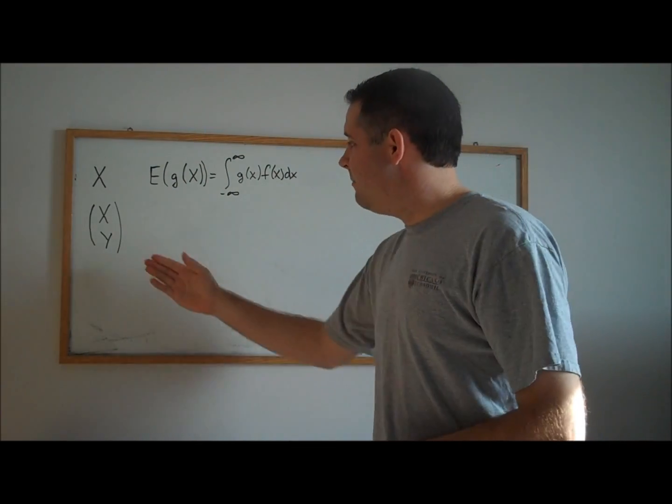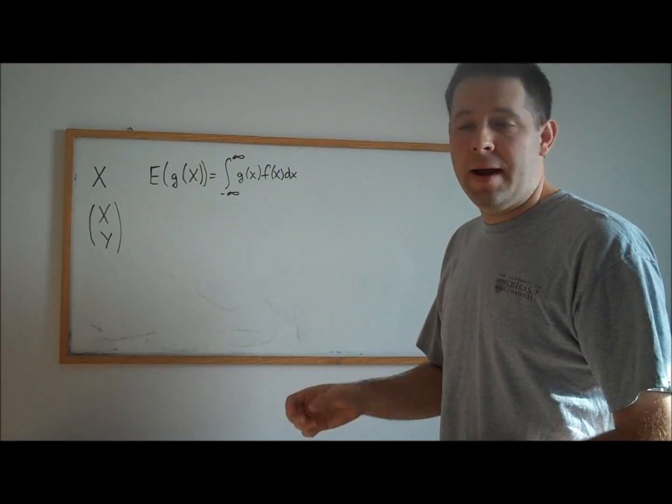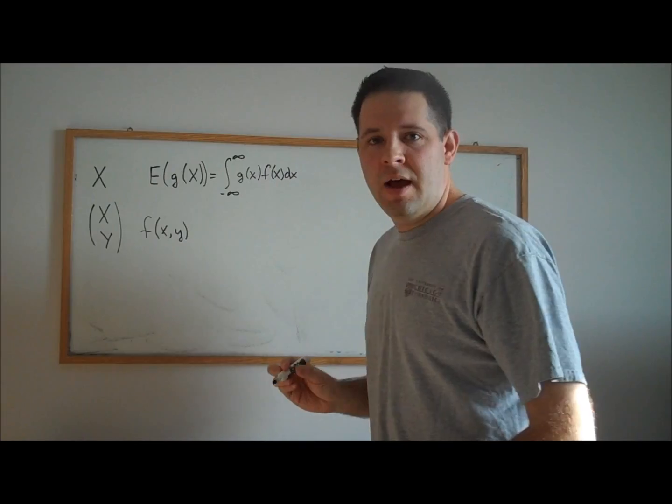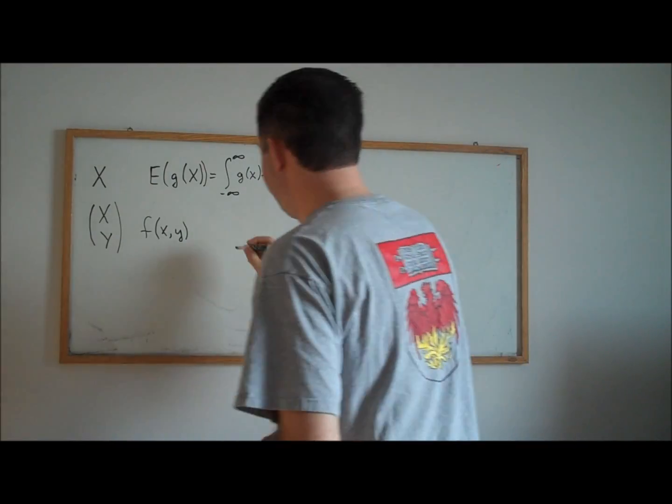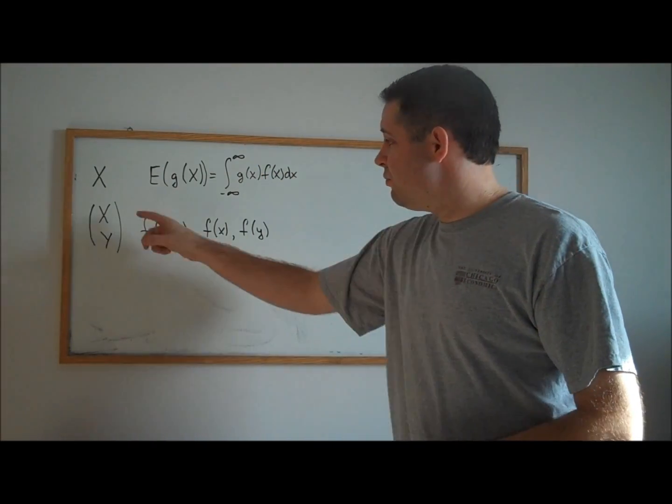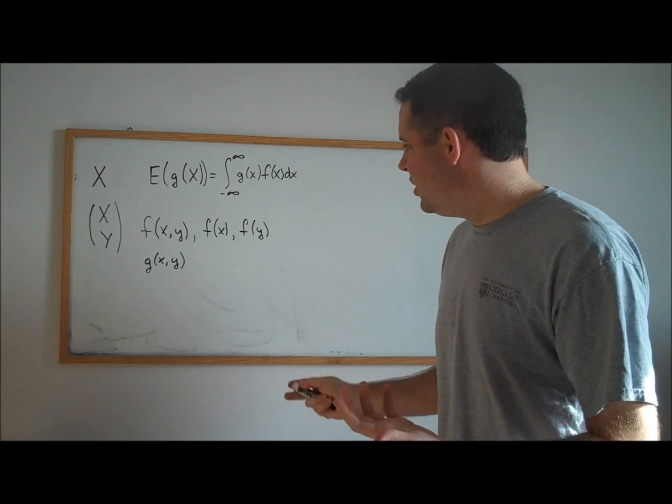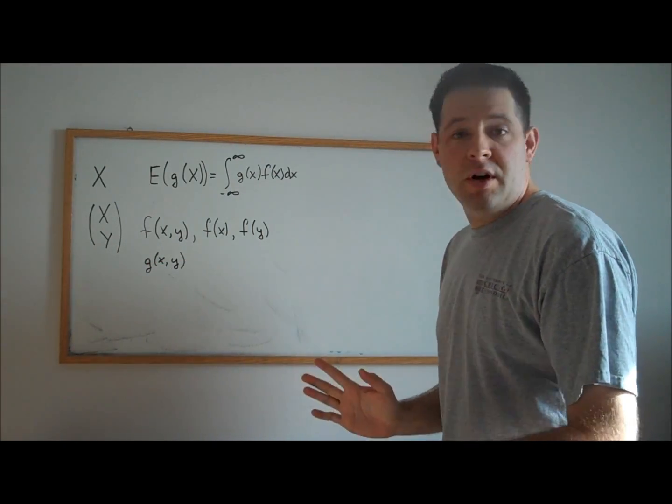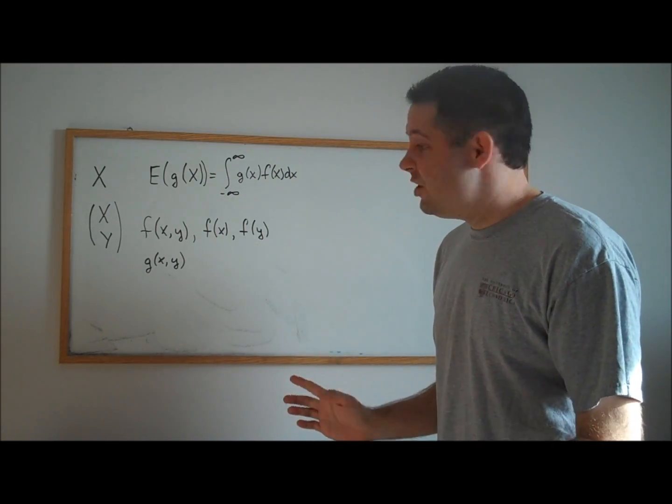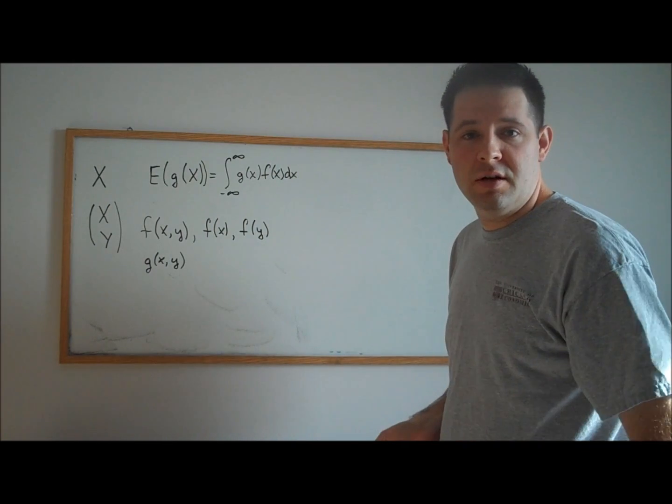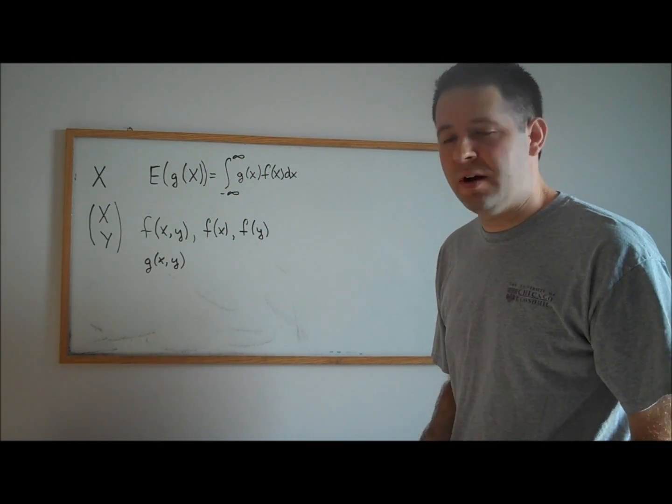Let's consider the random vector X and Y. This is going to have a joint distribution and some marginals. Now, suppose that we had a function of this random vector, g(X,Y). It takes two inputs and spits out one output. We want to know what the expectation of a function like this is.